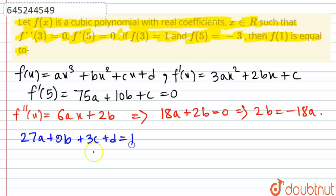And for f(5), if you put in the values we would be getting 125a + 25b + 5c + d = -3. Now call this equation 2, call this equation 1.